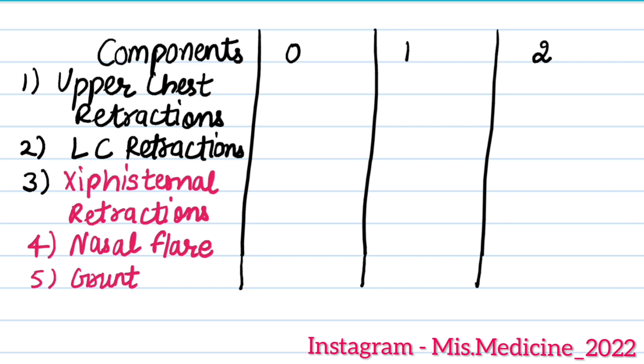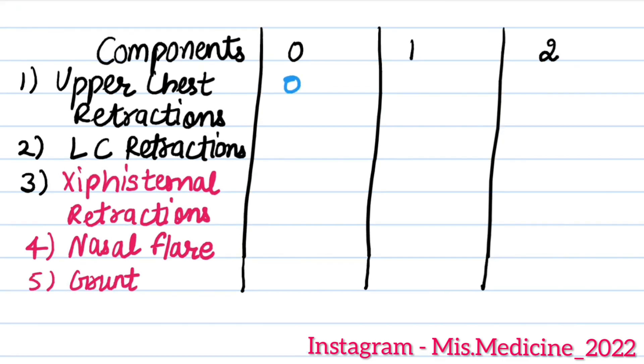So let's start. Upper chest retractions: if chest and abdomen rise together, it means zero. The score is one if the chest wall lags behind the abdomen. And there is score two if the chest wall and abdomen move in opposite directions, see-saw. Then it is two.